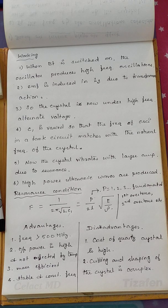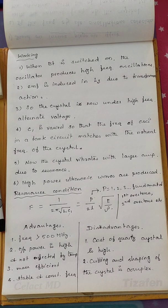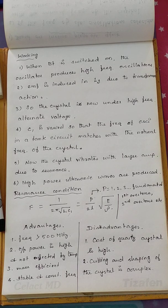These are all artificial methods of producing ultrasonic waves. Natural producers of ultrasonic waves include animals — the best example being bats, which can produce ultrasonic waves to detect obstacles in their path. A well-known application of ultrasonic waves is SONAR.